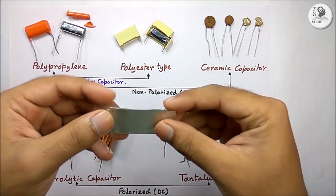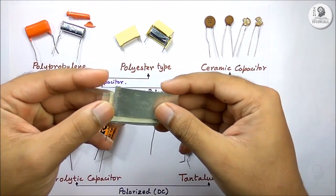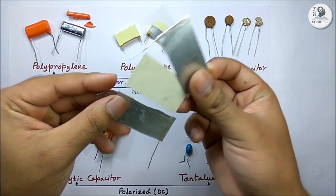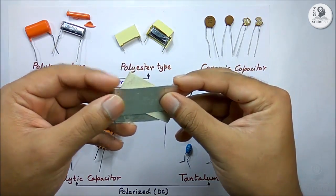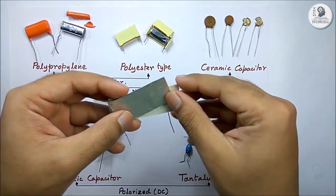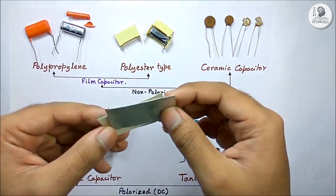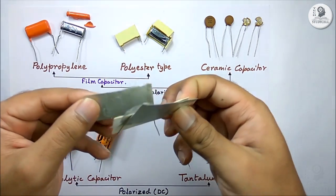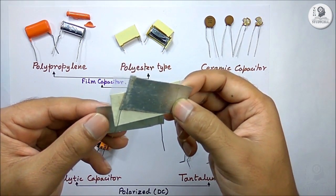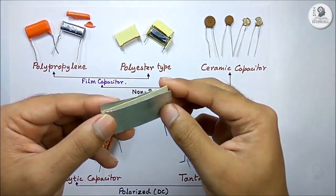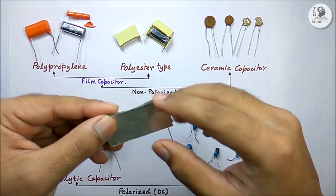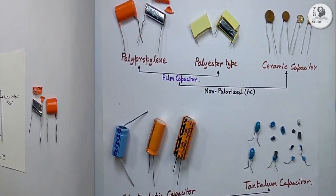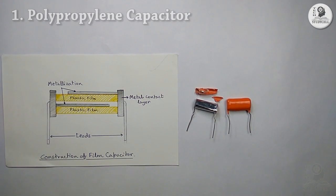We will find one thing common in all types of capacitor: you need two metallic plates and an insulating layer in between them to form a capacitor. But these two metal plates and the insulating layer between them are made from different materials for different types of capacitors, which we will discuss right now.